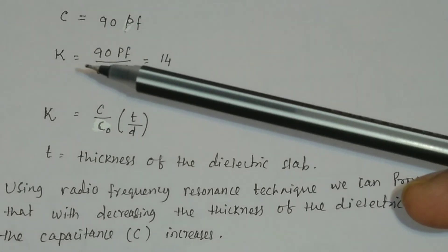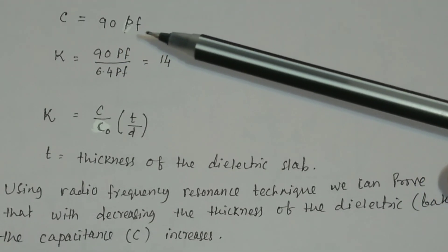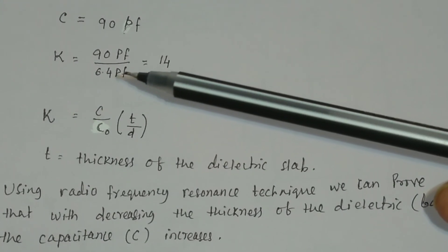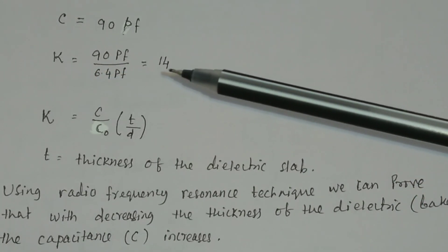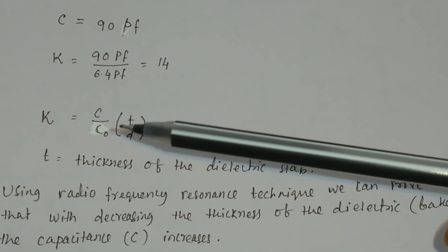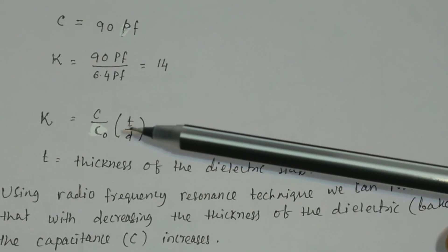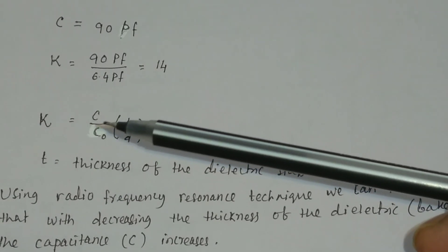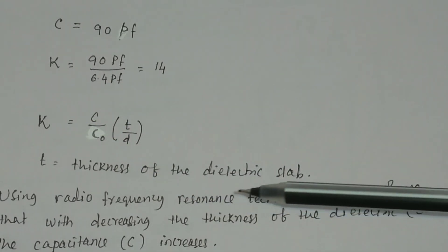You can calculate the dielectric constant using the formula C divided by C0. Here C is equal to 90 picofarad and C0, calculated for the parallel plate capacitor using the formula epsilon-0 A divided by d, is 6.4 picofarad. So the dielectric constant of bakelite will be equal to 14. In this experiment, you also find out how the capacitance varies with the thickness. If you change or vary the thickness of the bakelite plate, then the capacitance will also vary, because capacitance equals C0 times T divided by D, where T is the thickness of the dielectric slab.